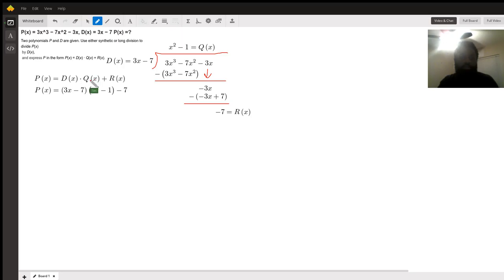So the divisor 3x minus 7 times the quotient x squared minus 1 plus the remainder, but in this case the remainder is negative, so it's minus 7 instead of plus 7.